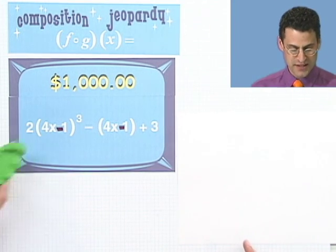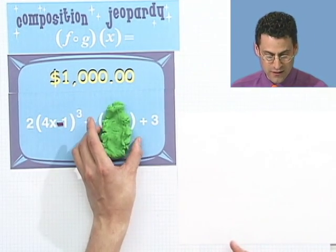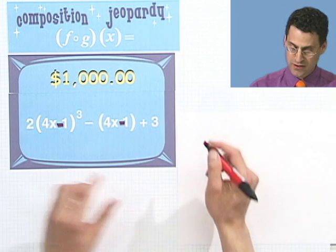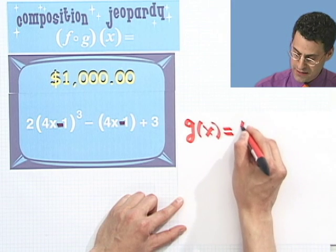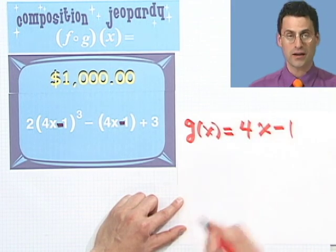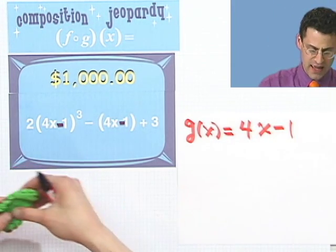Well, you can see the inside part, because I can sort of cover up that little piece right there. You see it appearing in both. So it looks like g of x might be 4x minus 1.